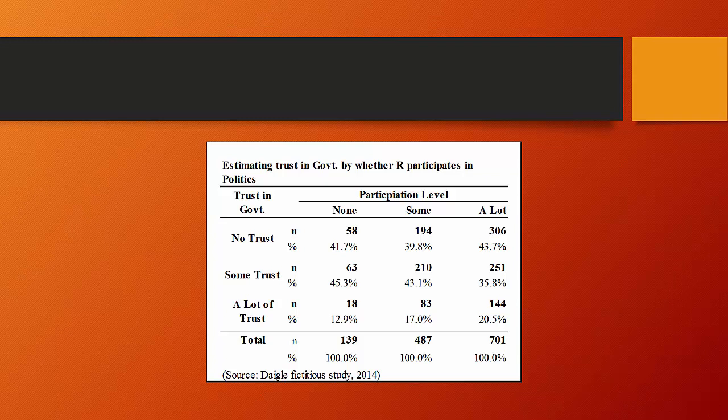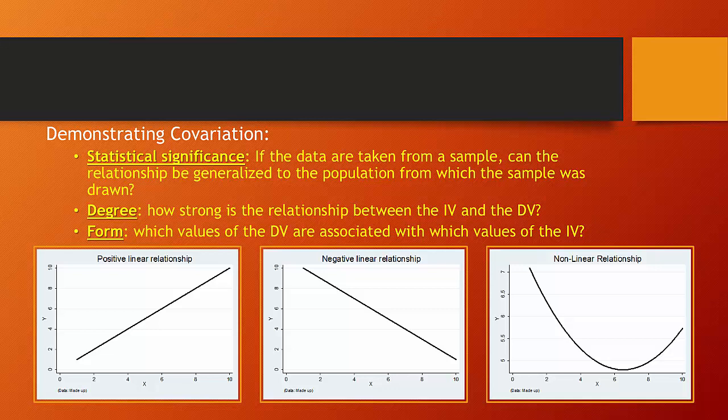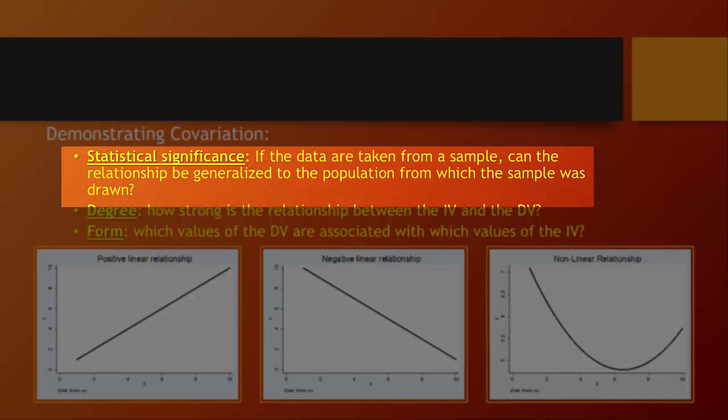When we look at a bivariate relationship, or even later in the course when we look at a multivariate relationship, we're looking for three things. We're looking for statistical significance, and that is, if the data are taken from a sample, can the relationship we observe in this sample be generalized to the population from which the sample was drawn?